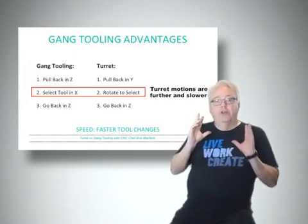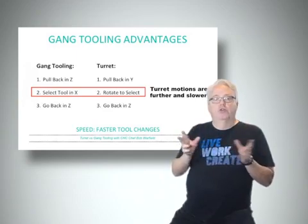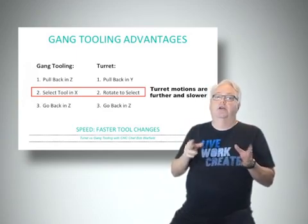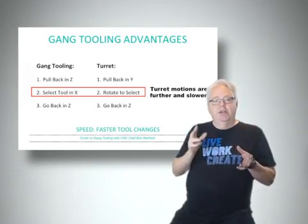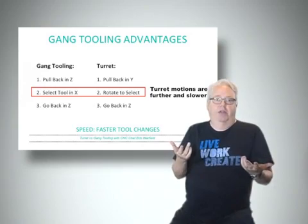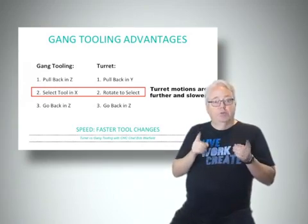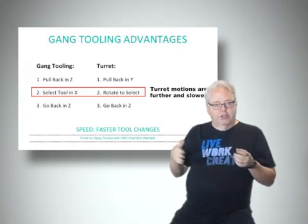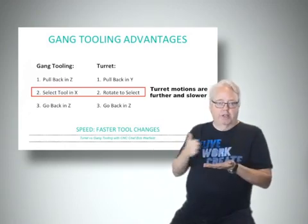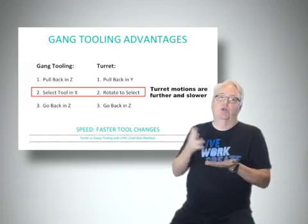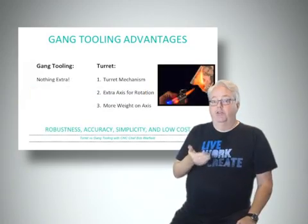In both cases we have to pull back before changing tools so the tooling won't bump into the work, and once the tool change is complete we have to move back into the work again. But what's different is the turret usually has to move further, and rotating the turret is usually a lot slower than the quick Y-axis motion needed to select a tool on a gang lathe.